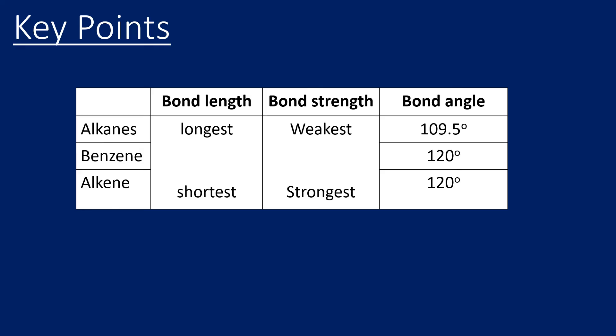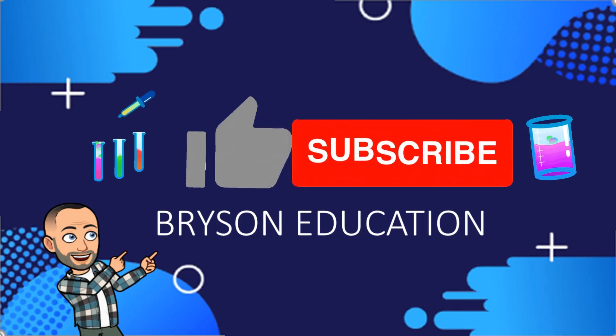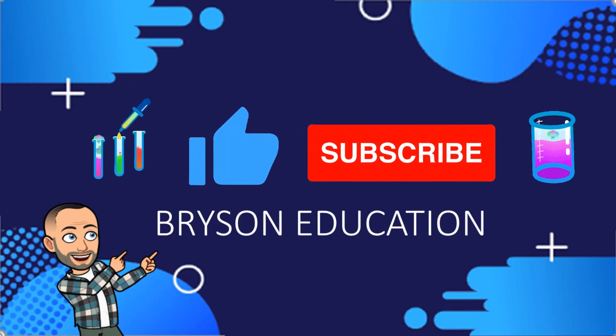Here's a summary table to bring together all the key points. Alkanes have the longest and weakest carbon-carbon bonds, alkenes have the shortest and strongest, and benzene sits in between. Bond angles are 109.5 degrees for alkanes and 120 degrees for both alkenes and benzene. Thanks for watching — hopefully you found that useful.